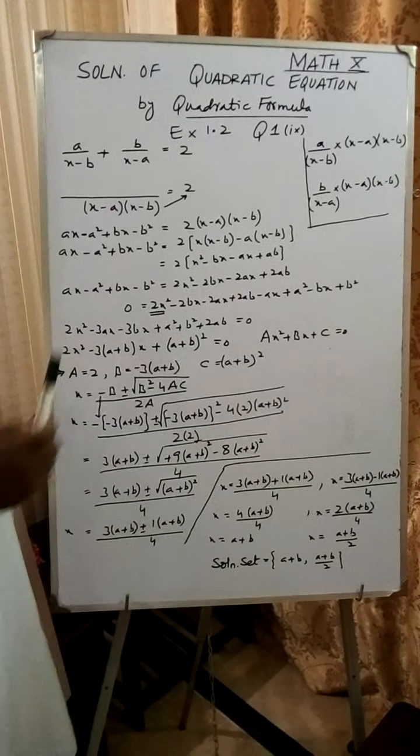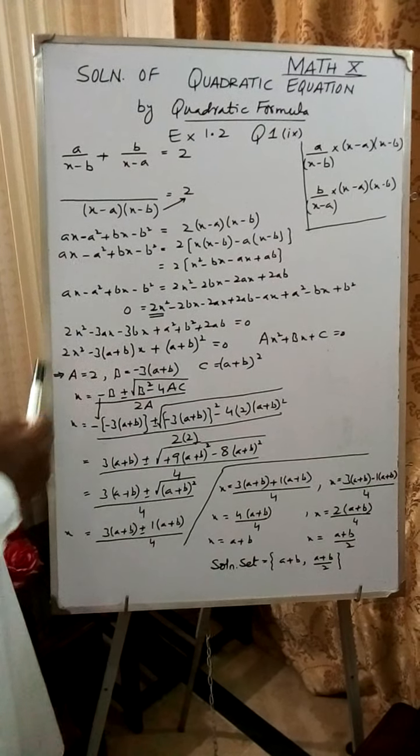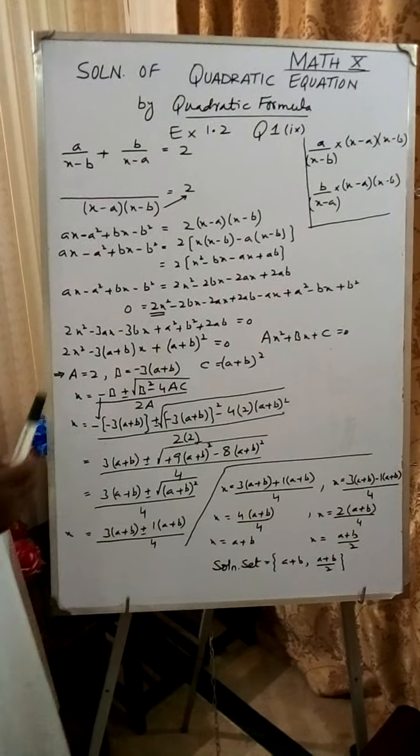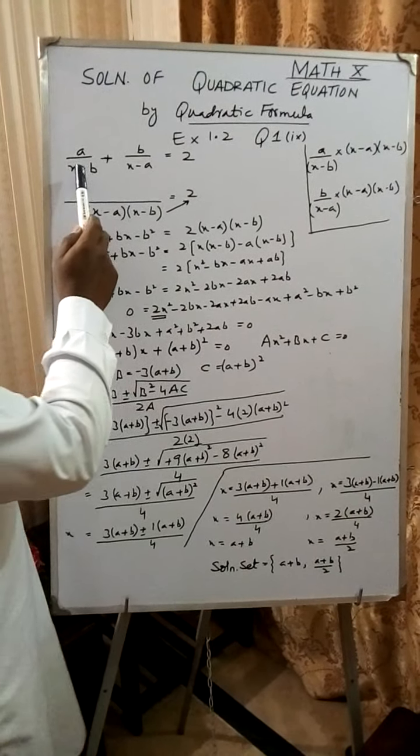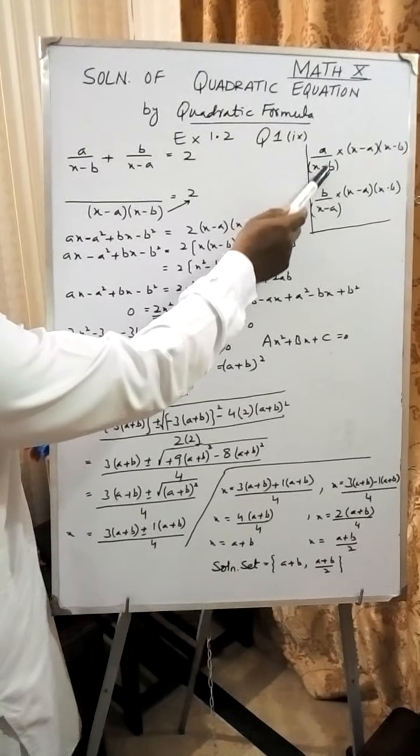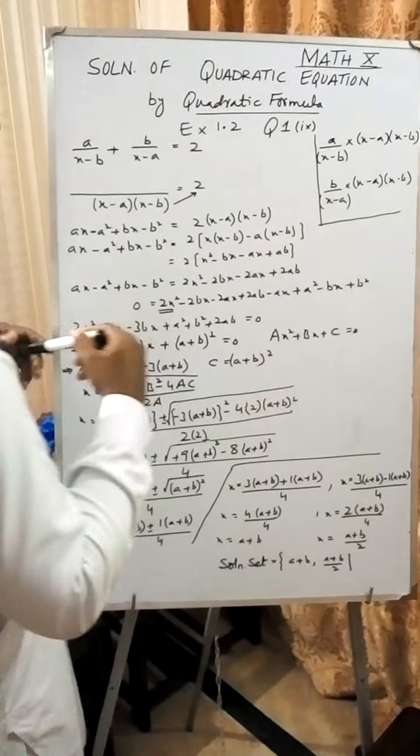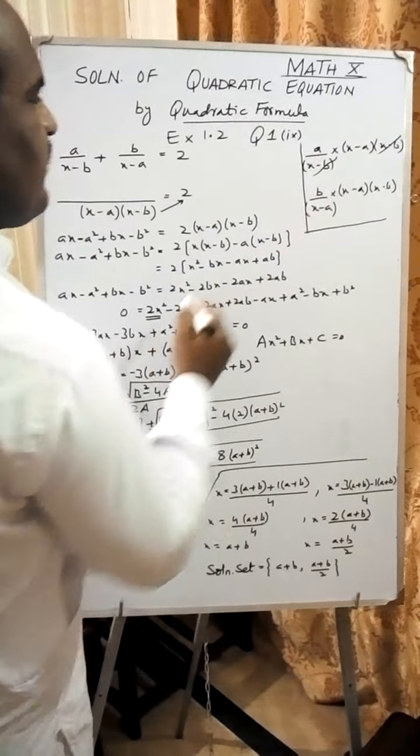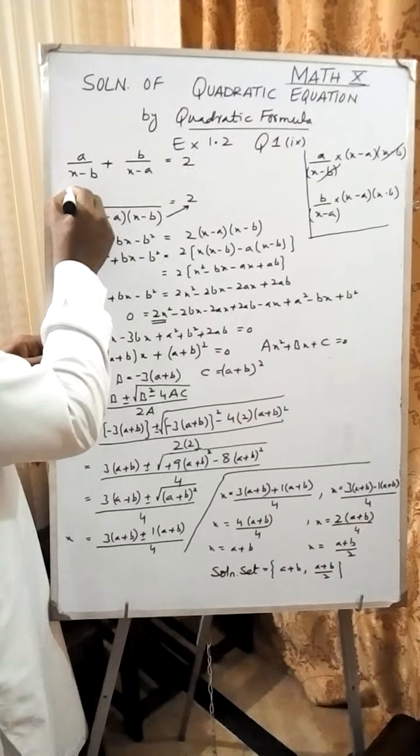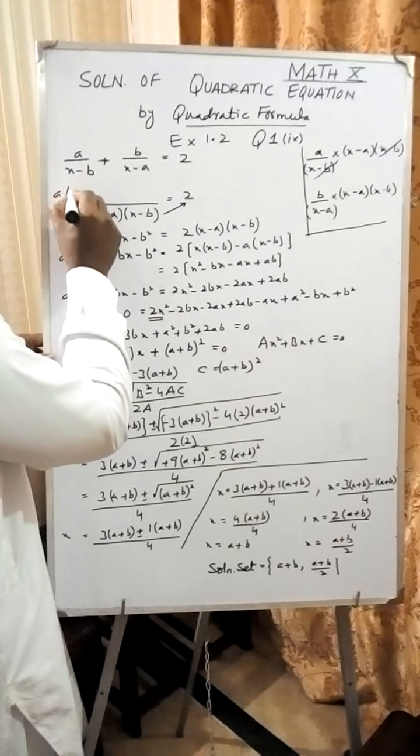So the LCM will be the product of both: (x - a) times (x - b). Now remember, the first fraction is a over (x - b). The LCM will be multiplied, so x minus b and x minus b will be cancelled, giving us a times (x - a).